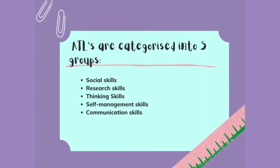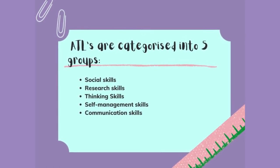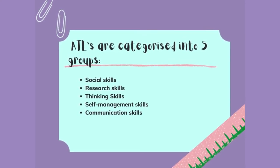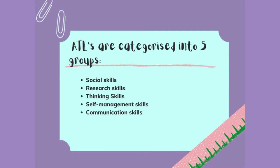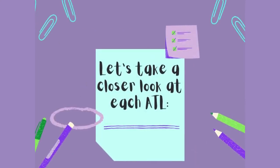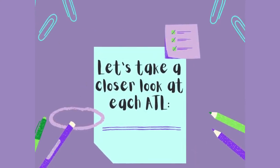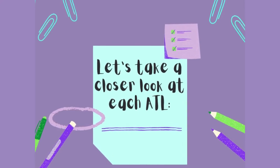ATLs are categorized into five groups: social skills, research skills, thinking skills, self-management skills, and communication skills. Let's take a closer look at each ATL.